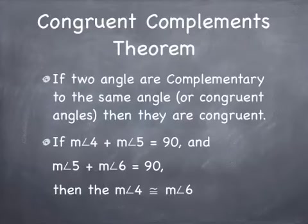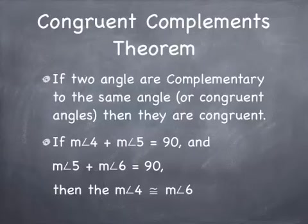The congruent complements theorem is similar to the supplements theorem. It says if two angles are complementary to the same angle or congruent angles, they are congruent. So if the measure of angle 4 plus angle 5 equals 90, and angle 5 plus angle 6 equals 90, then angle 4 is congruent to angle 6. For example, if angle 5 is 40, then angle 4 is 50; plugging 40 in again, angle 6 is also 50. No matter what you plug in for angle 5, angles 4 and 6 must be the same because they both add with the same number to equal 90.